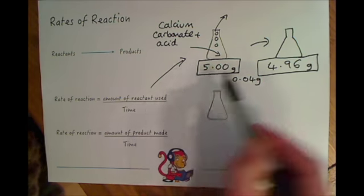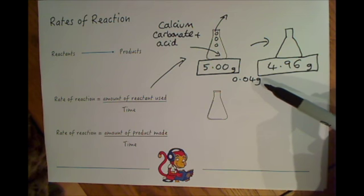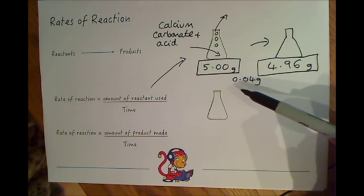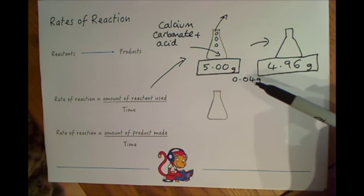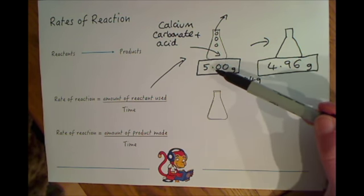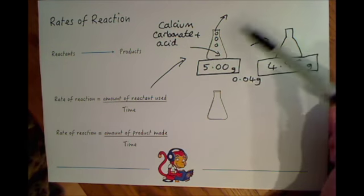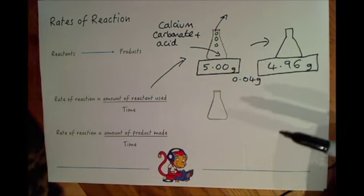The amount of reactants used is one thing that we could look at. If we were to time this, we could then work out the rate of reaction. For example, we could look at 0.04 grams of reactants used up over a minute. This will tell us by the mass change how quickly this reaction is happening if we were to time how long it takes to lose a certain mass.